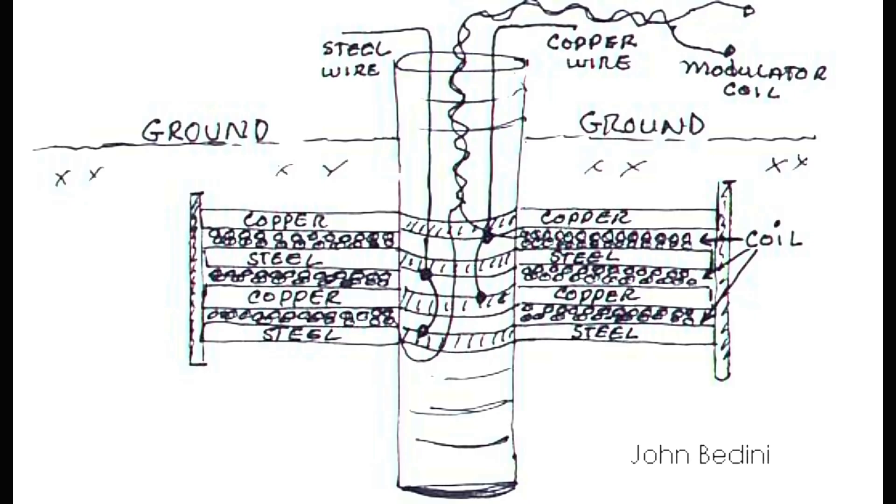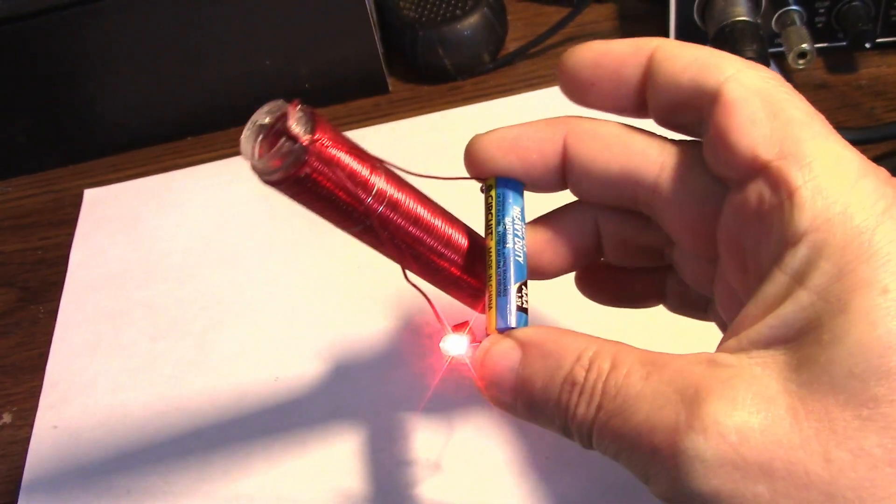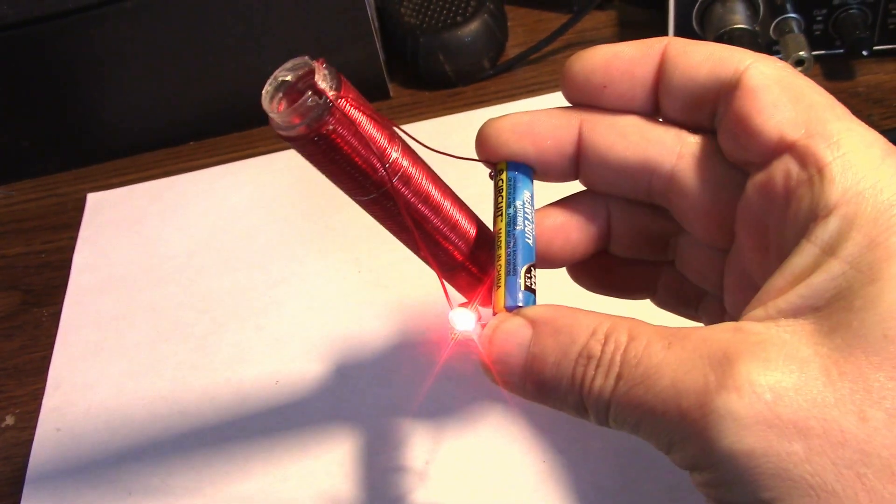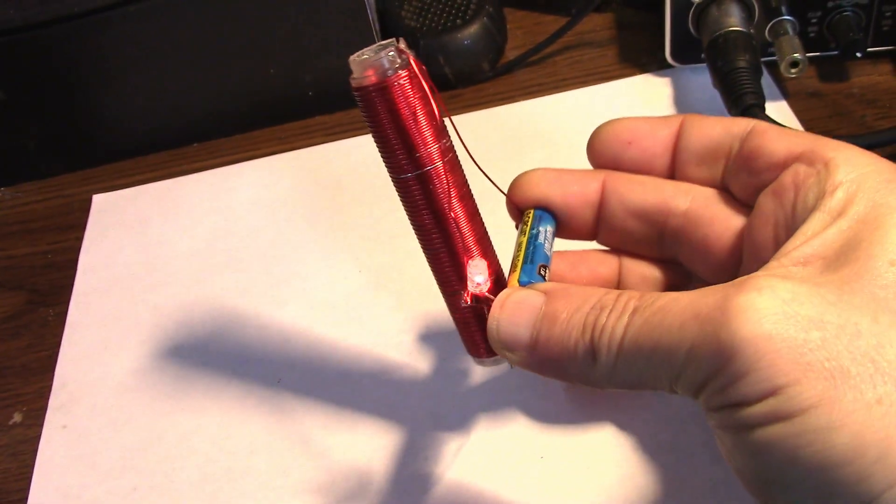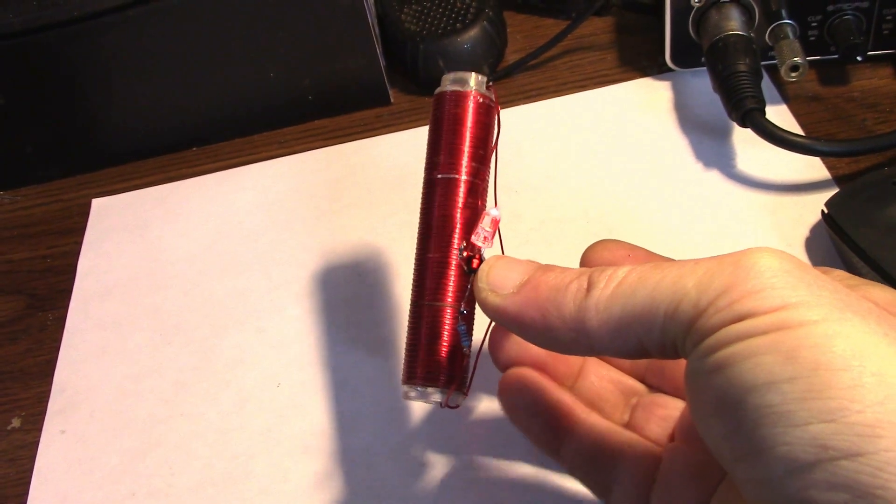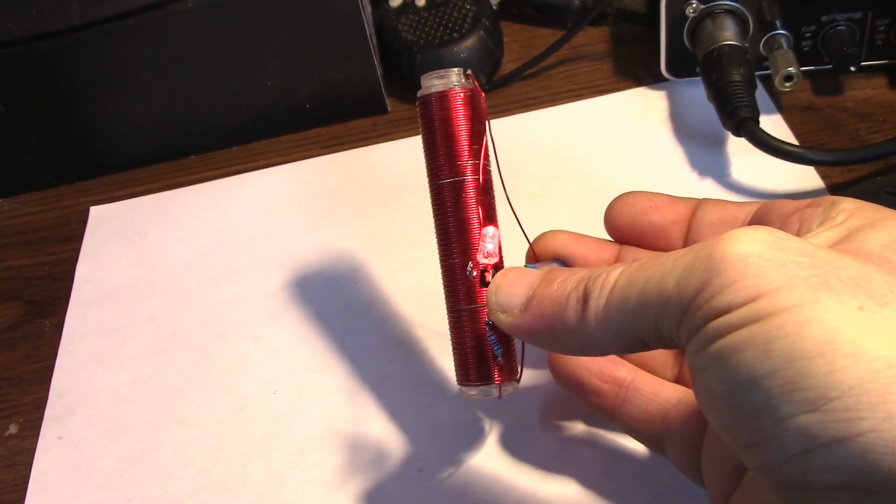But does it work with a joule thief circuit? And yes, yes it does, with a 1.5V AAA. It uses 18mA. I've got a 10k resistor to the base of a 2N2222.